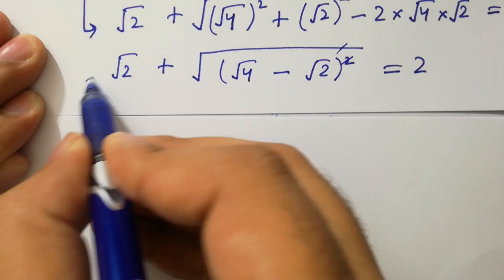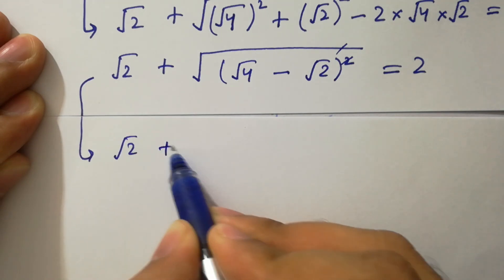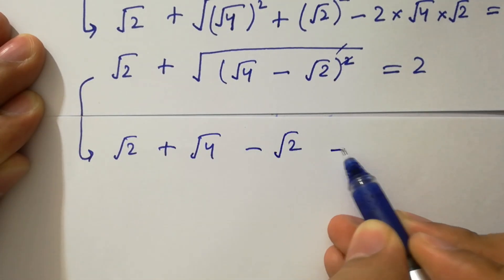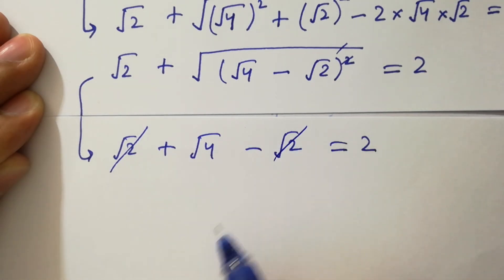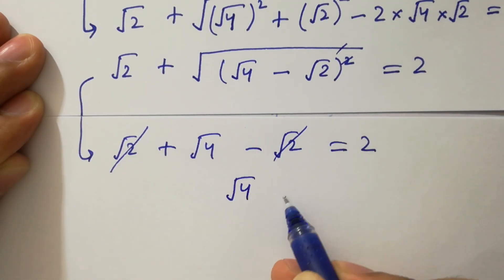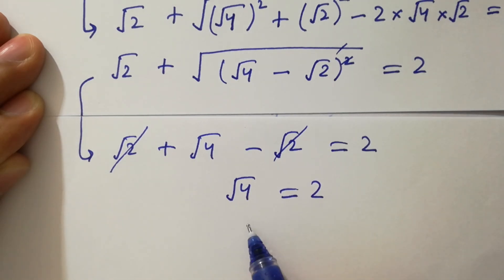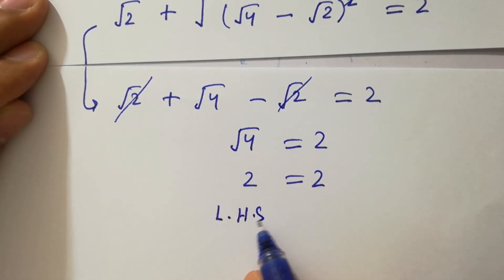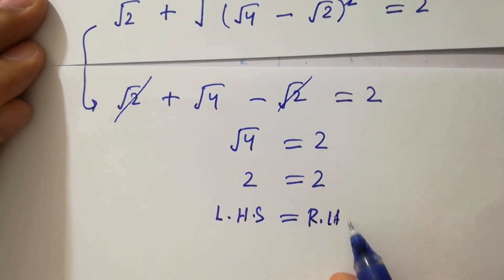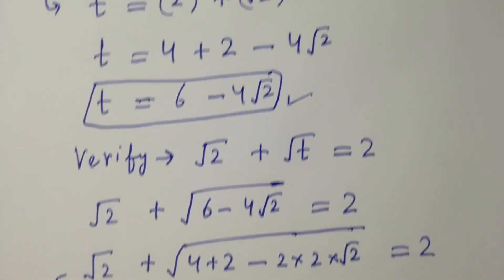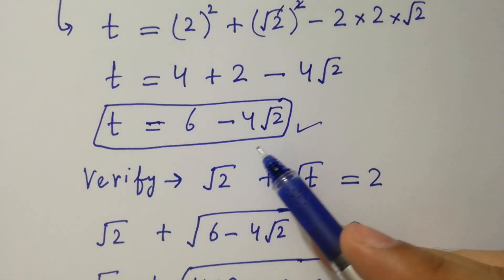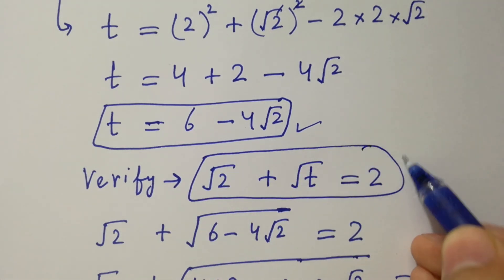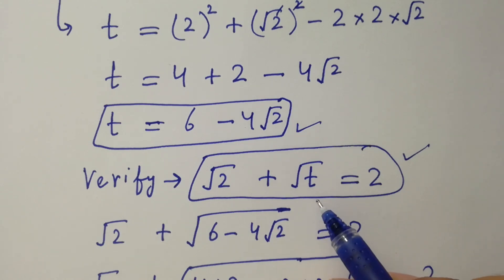The square cancels from the square root. We have square root of 2 plus square root of 4 minus square root of 2 equals 2, where square root of 2 cancels. So square root of 4 is 2, equals 2. Left hand side is equal to right hand side, which shows that the value of t equal to 6 minus 4 square root of 2 satisfies the equation square root of 2 plus square root of t equal to 2.